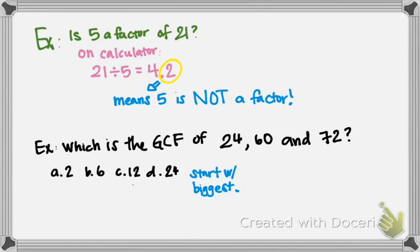So what do you need to do? You need to check if 24 is a factor of all 3. So I'm going to do on my calculator. 72 divided by 24 is 3. Yay! 60 divided by 24 is 1.2. Boo! What does that mean? Well, it means that 24 is not a factor of 60. So therefore, D, 24, is not the answer.